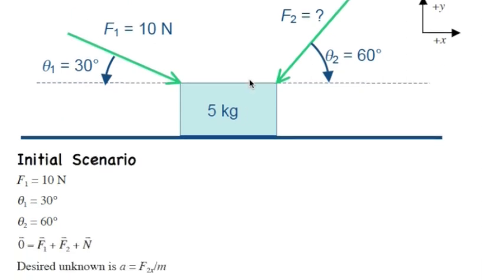So first, write down everything we know. F1 is 10 Newtons. Theta 1 is 30 degrees. Theta 2 is 60 degrees. We've got our Newton's second law here written out as a vector equation that the net force is zero, which is F1 plus F2 plus the normal force, N.